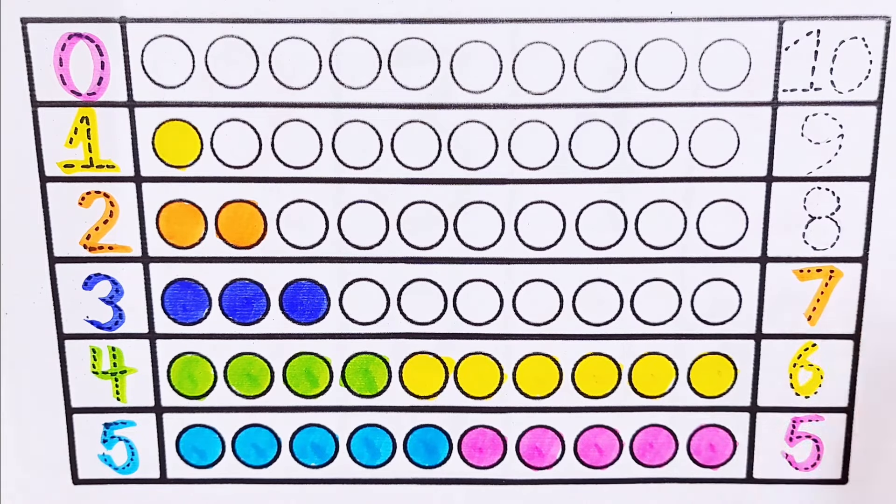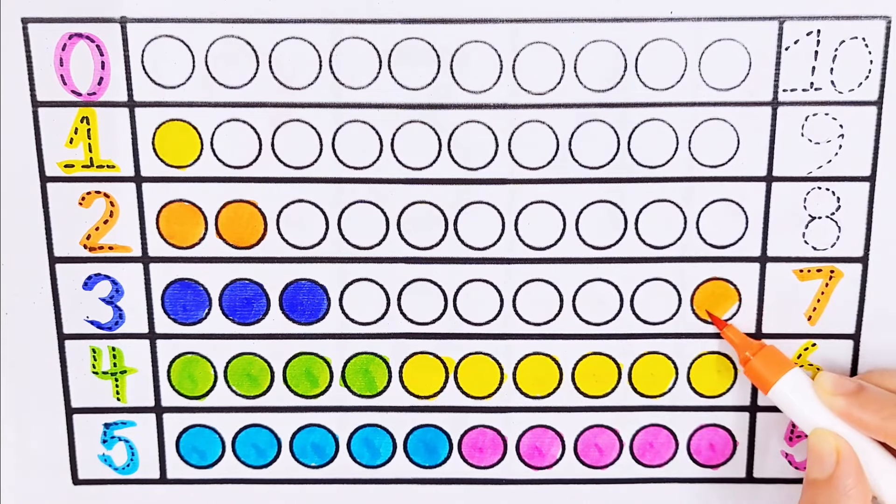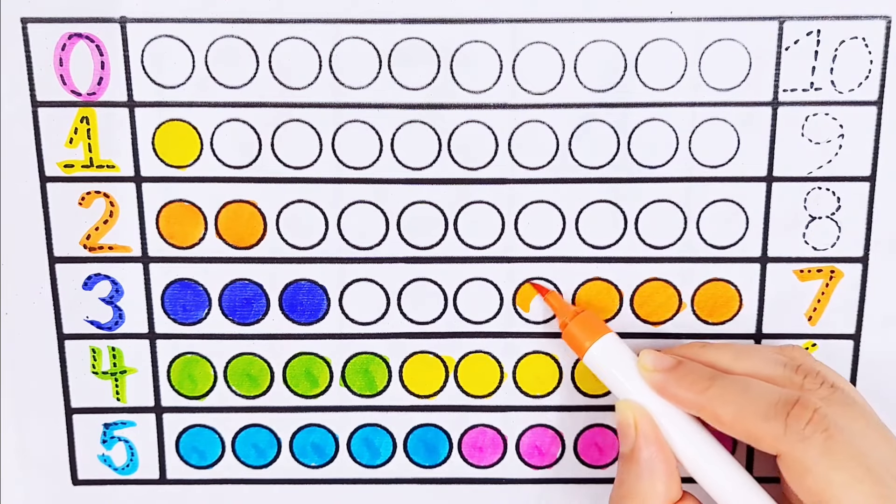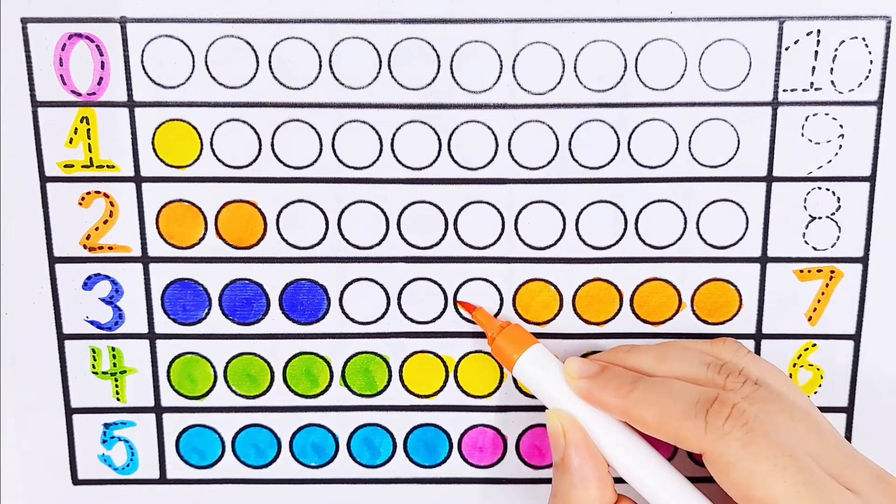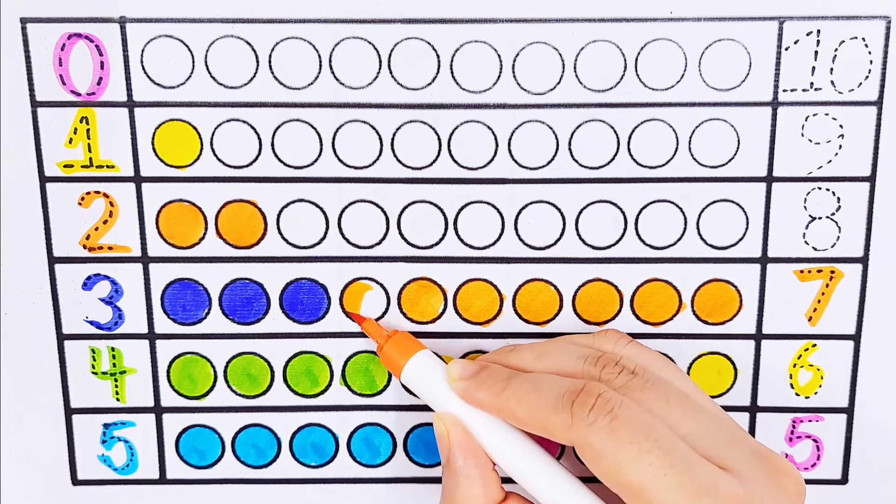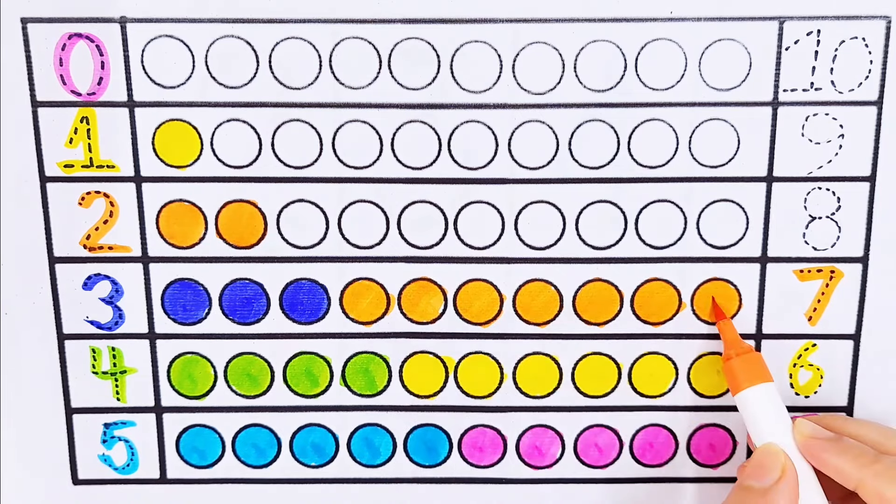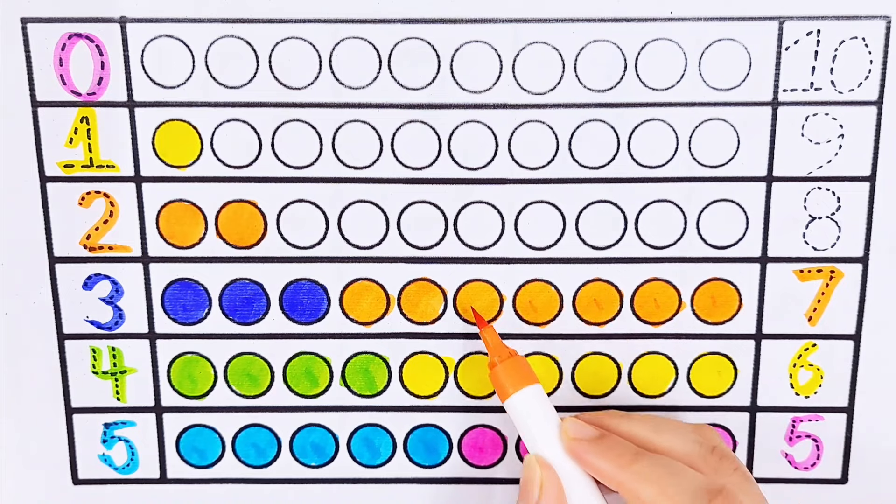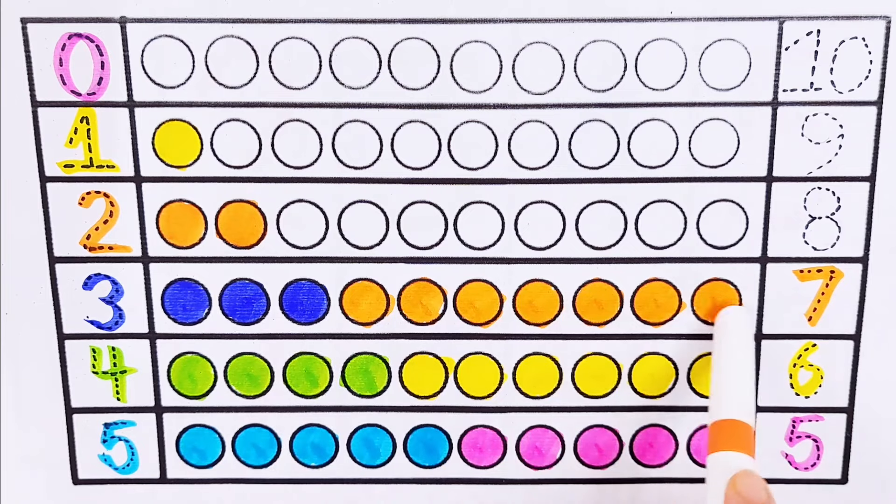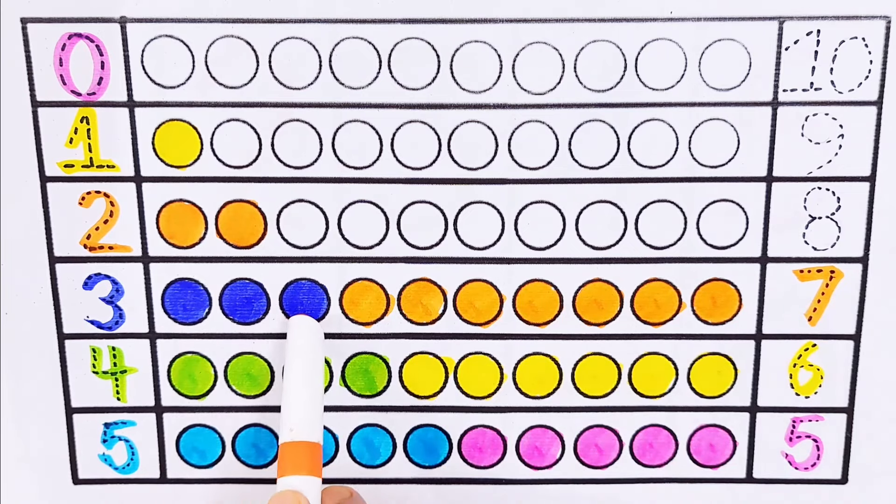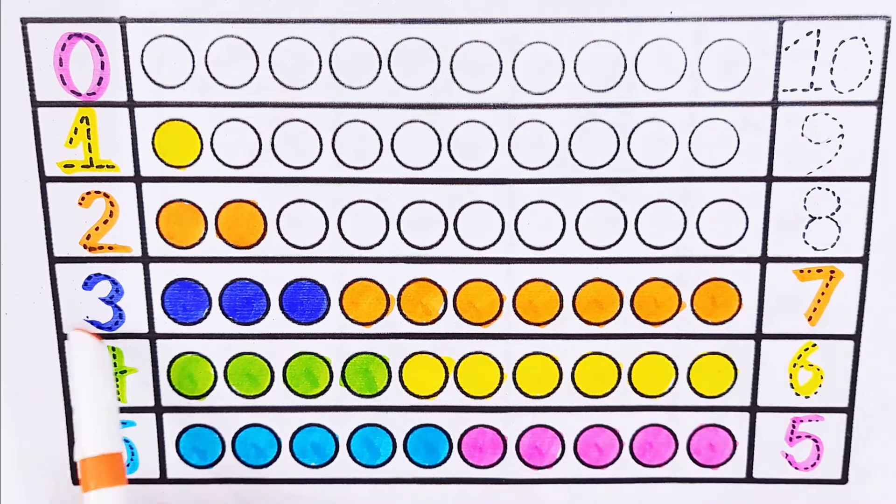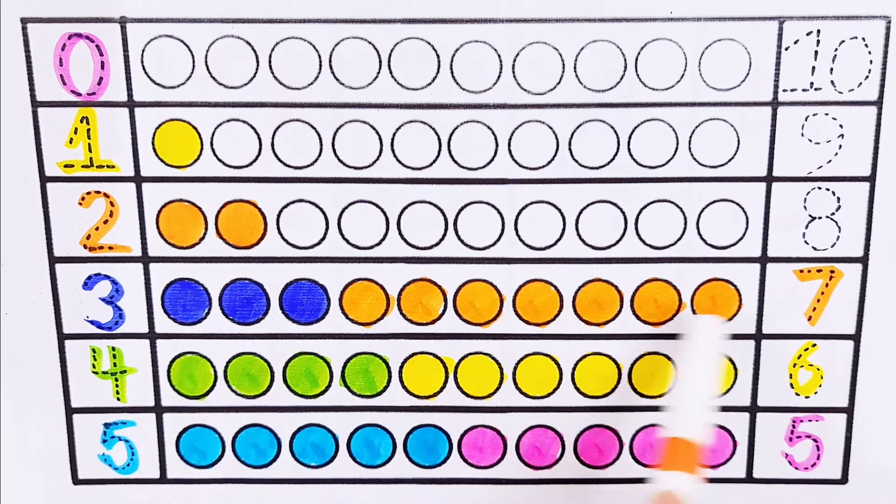Number 7: 1, 2, 3, 4, 5, 6, 7. 1, 2, 3, 4, 5, 6, 7, 8, 9, 10. 3 plus 7 equals 10.